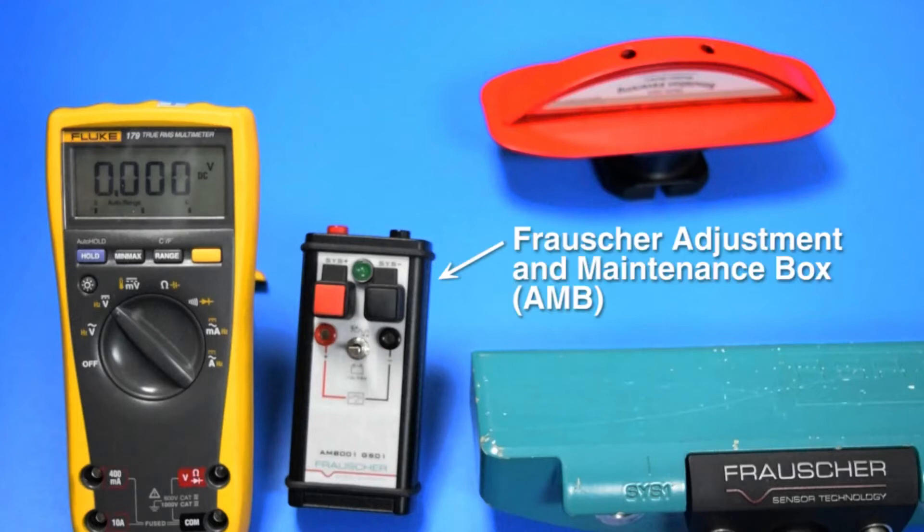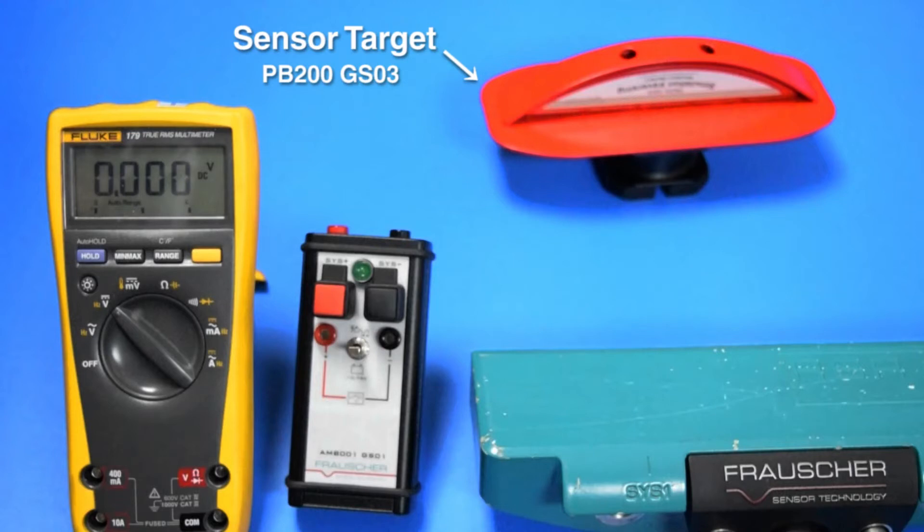You will need the adjustment and maintenance box known as the AMB, the sensor target, a digital voltmeter, and two banana-to-banana test leads.